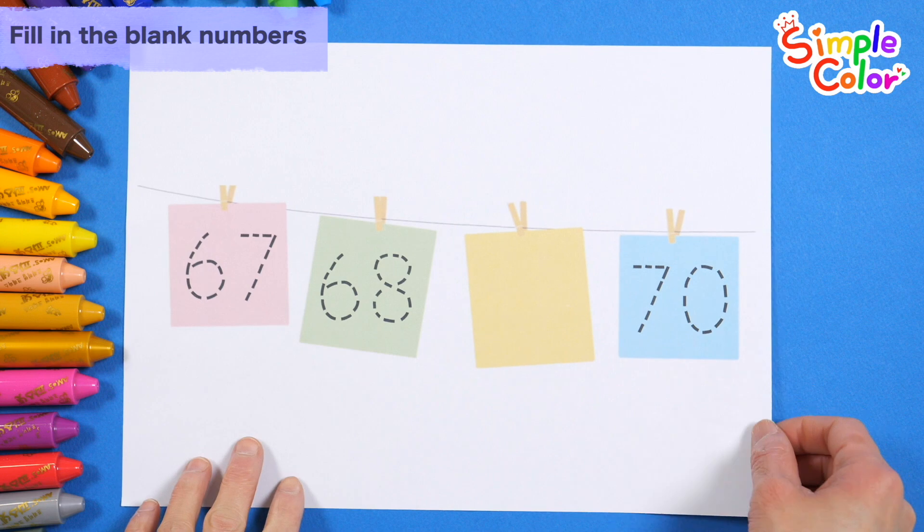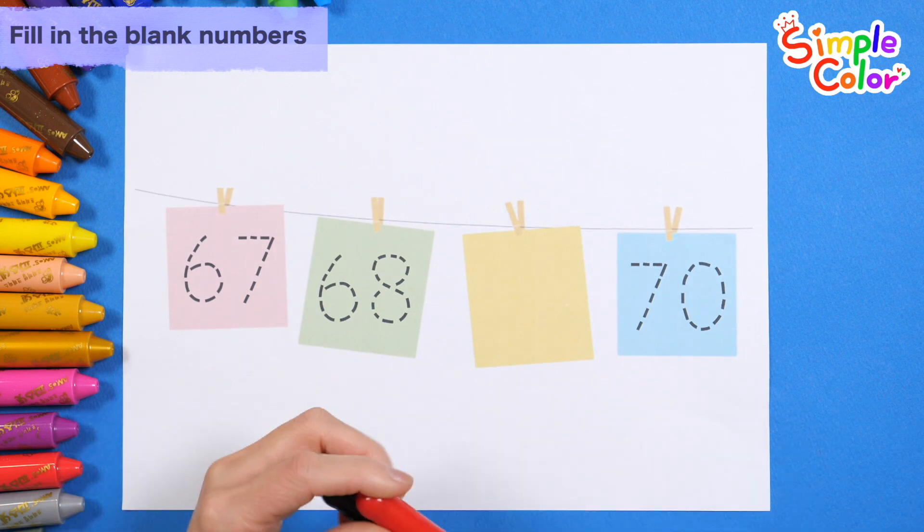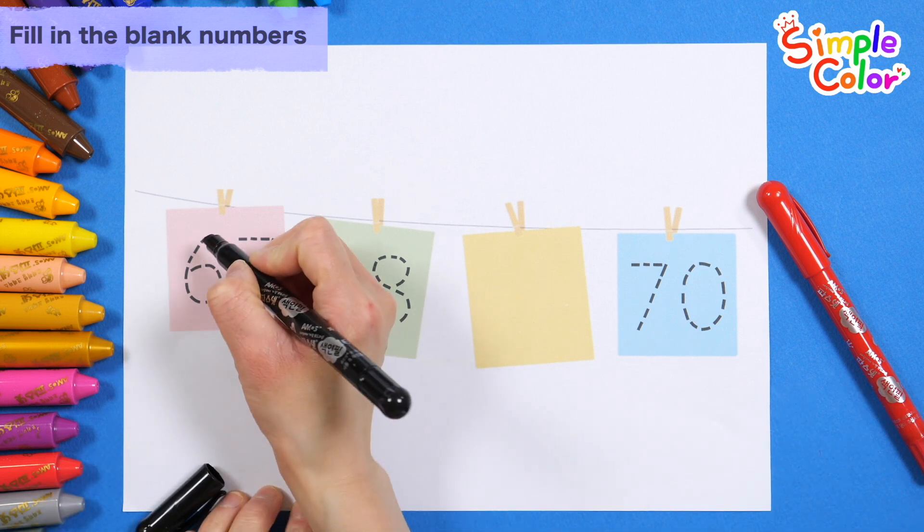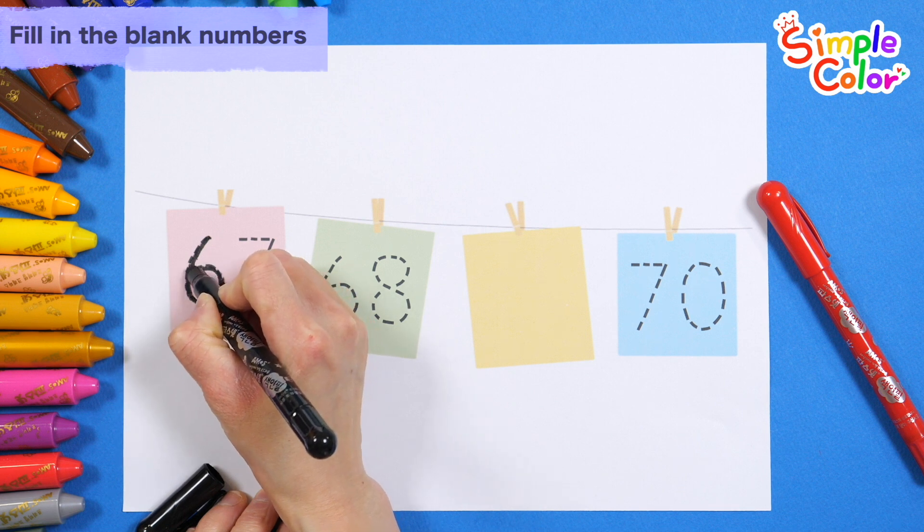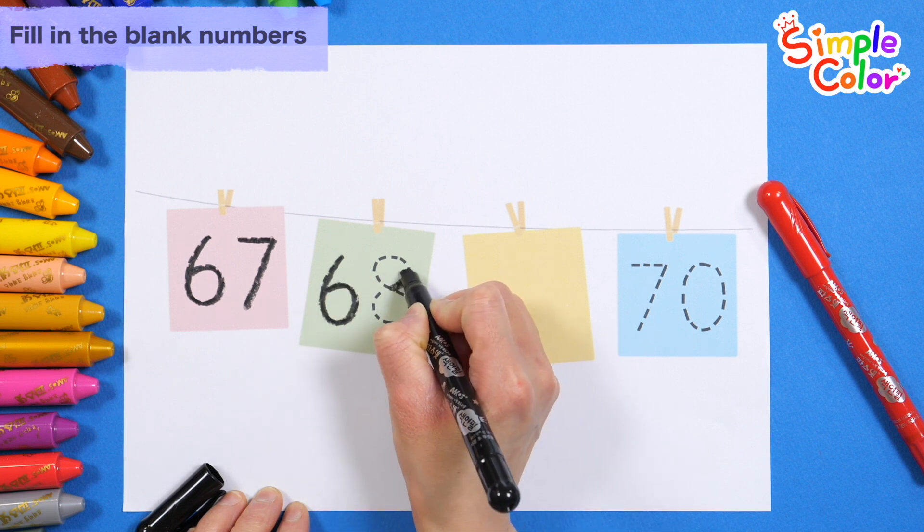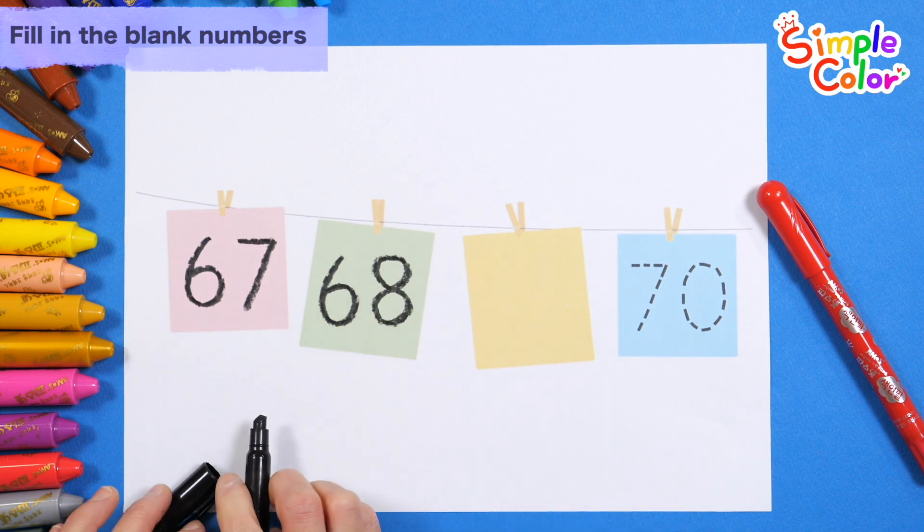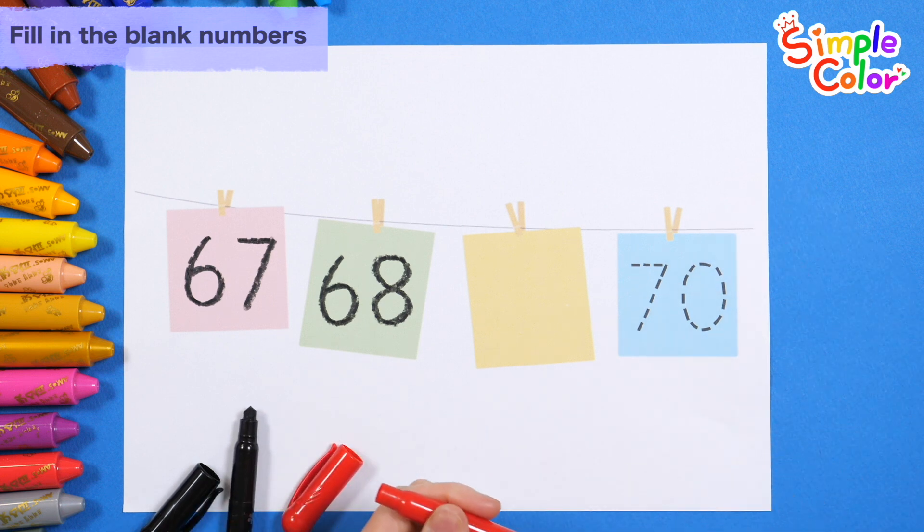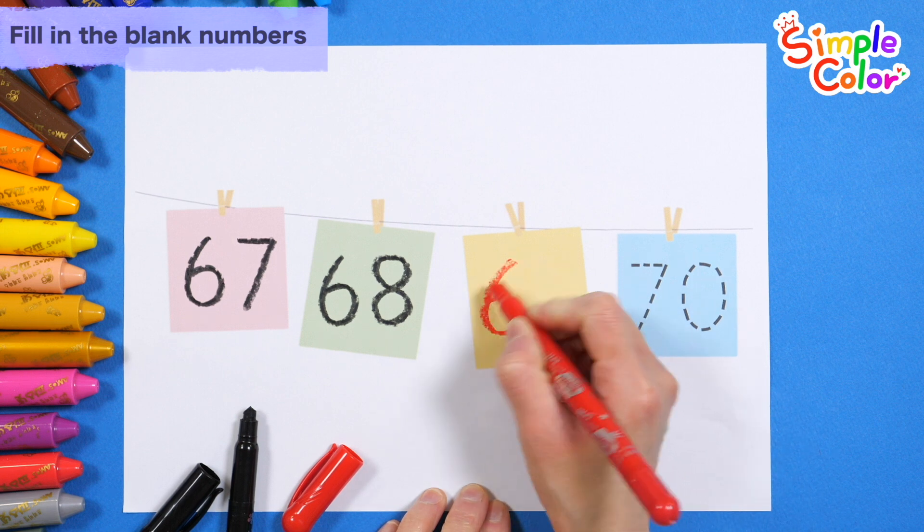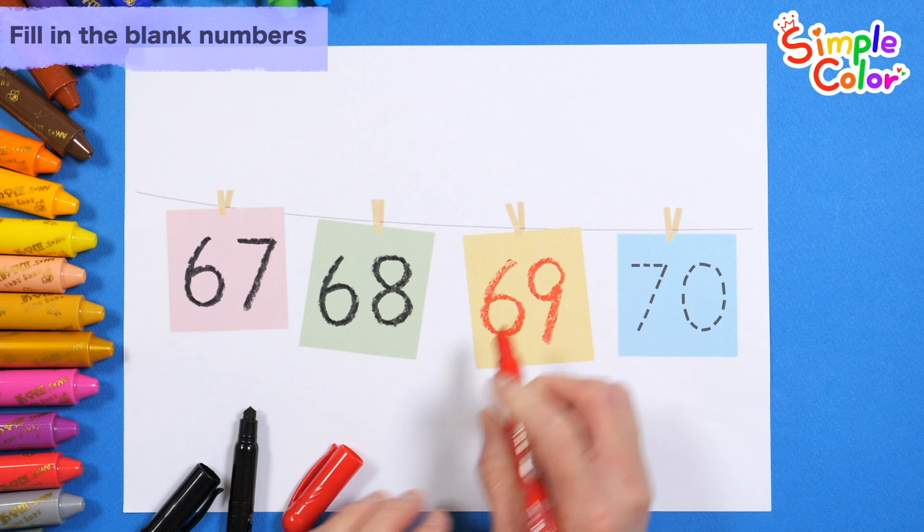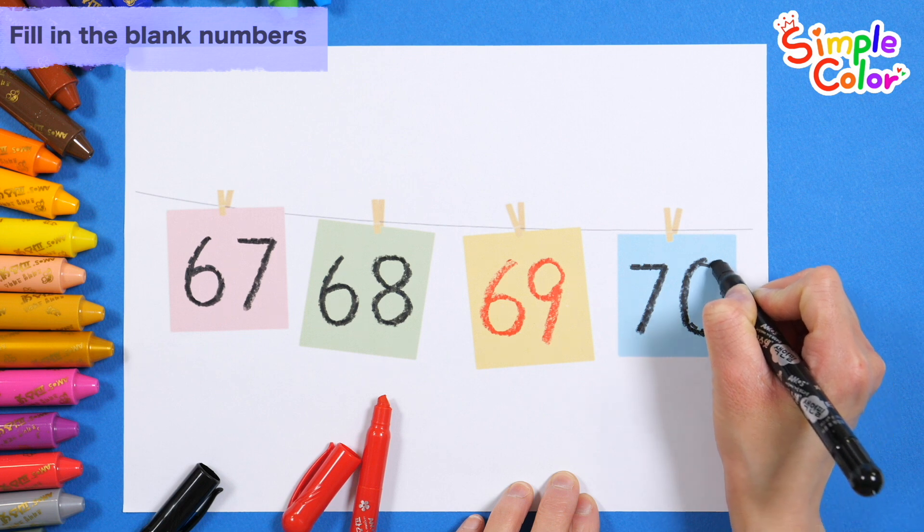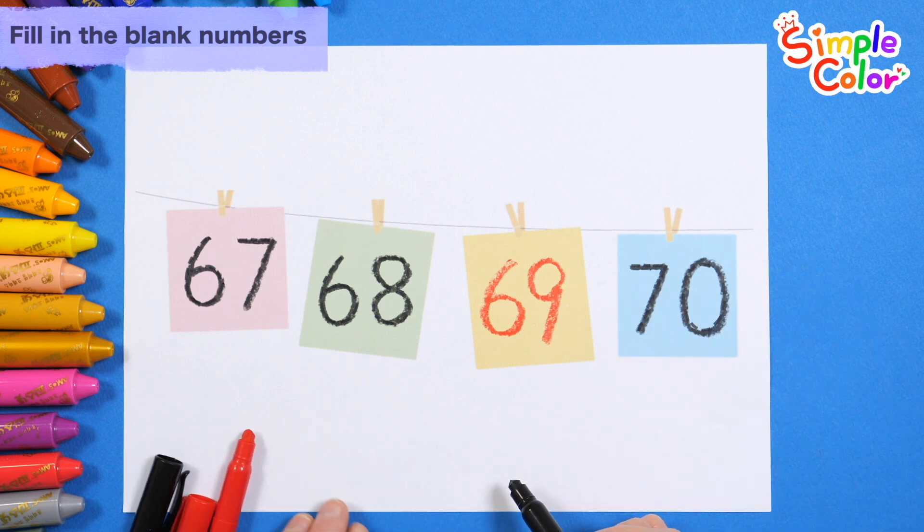Write the numbers along the dotted lines and guess the numbers that fit in the blank spaces. H-I-J-K-L-M-N-O-P, Q-R-S-T-U-V, W-X-Y. Now I know my ABC's. Next time won't be with me. 68. What number goes in the blank space? Shall we read the numbers in order?